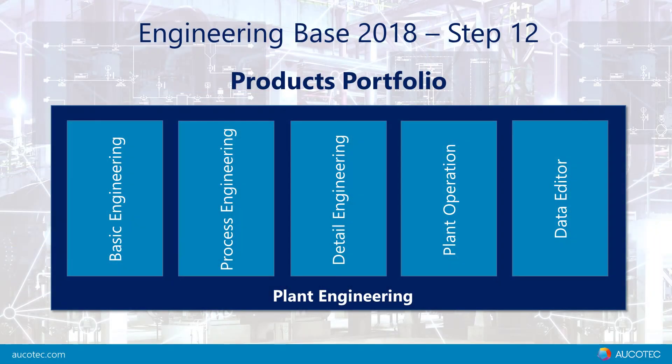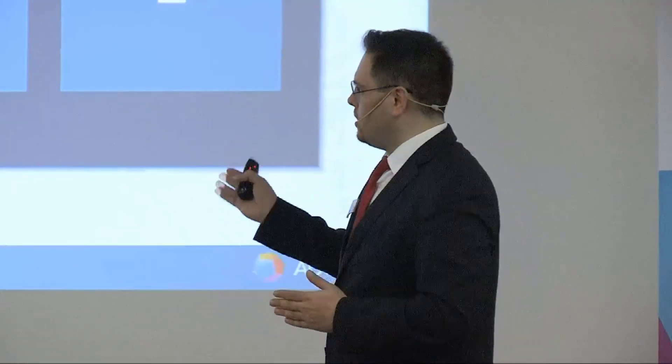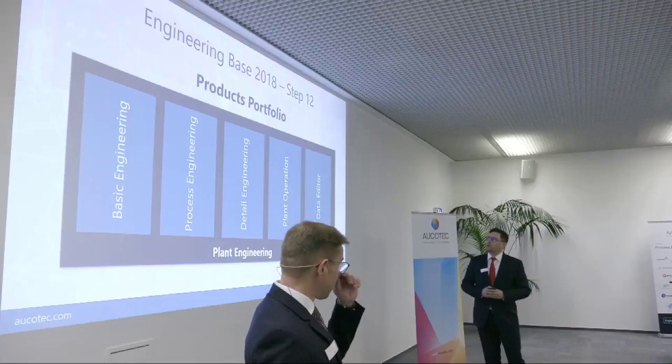The last step was creating products that fit exactly to the disciplines of plant engineering — no options or variants to select. There are clear products directly targeting specific disciplines, so customers can buy a product that fits exactly to their discipline with everything they need included. This is the new product portfolio being released in 2018.